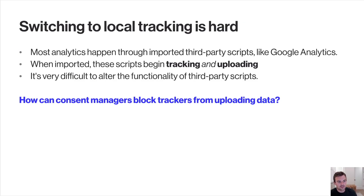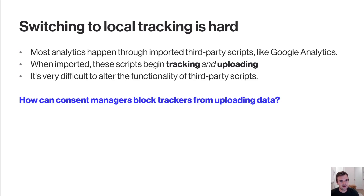Switching to local tracking is extremely hard because most analytics happen through third-party scripts like Google Analytics. When these scripts are imported, they will immediately begin tracking and uploading data about the user. It's very difficult to alter the functionality of these third-party scripts because it's imported code you can't really change. So how can we actually block these trackers from uploading data?